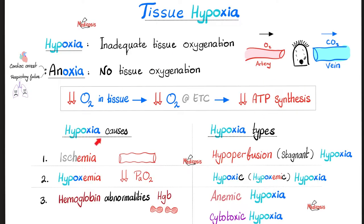Causes of hypoxia, as we discussed in the last video: ischemia, hypoxemia, hemoglobin abnormalities. Problem in the vessel or blood going to the organ. Problem in the arterial oxygen partial pressure. Or a problem in hemoglobin — the car that carries oxygen. This is just one classification. There is another classification: hypoperfusion hypoxia, hypoxic hypoxia, anemic hypoxia, and cytotoxic hypoxia. And this shall be the topic of the next video.